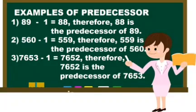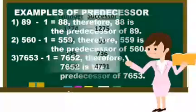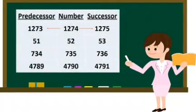So here we learned about successor and predecessor. Successor means after number. Predecessor means before number. To find out the successor, you add 1 to the particular number. To find out the predecessor, subtract 1 from that particular number.